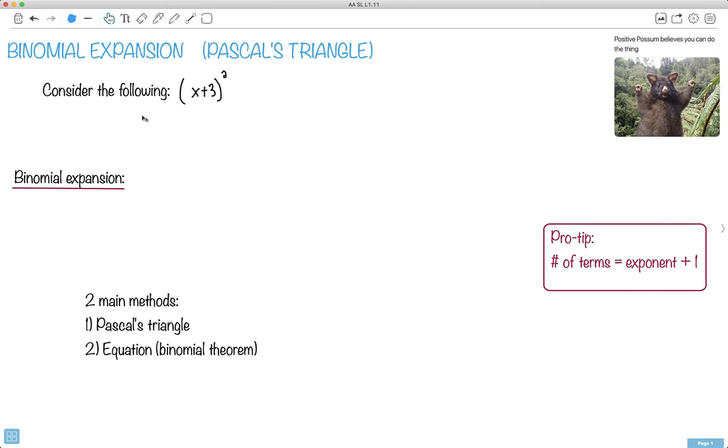So first of all, it helps to just consider what is a binomial. Bi means two, right? Bicycle has two wheels, biplane has two wings. Well, binomial has two terms. So this is a really good example of a binomial, x plus 3.